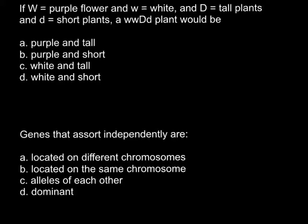You have to choose the correct answer. When a plant has two recessive alleles for a trait, here we would have white. And as long as the second set of alleles has one dominant allele and one recessive allele — in simple Mendelian genetics, capital D is dominant over small d — that means this plant is going to be tall. So white and tall: the correct answer is C.